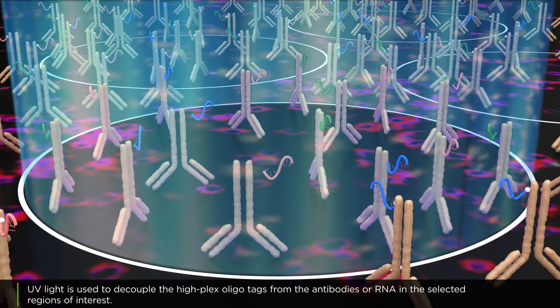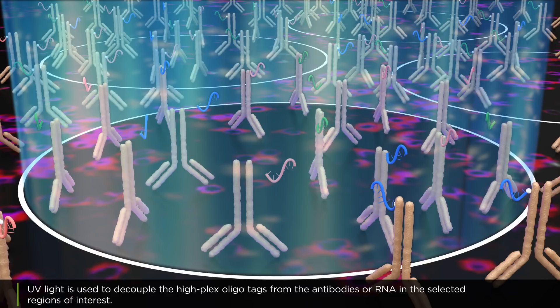UV light is used to decouple the high plex oligo tags from the antibodies or RNA in the selected regions of interest.